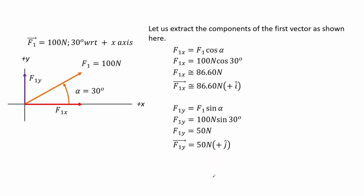Now let us extract each of the components of the three vectors. First for Force 1, the x component is the cosine function of the angle 30 degrees, which is about 86.6 newtons. In vector form, we add a positive i hat. Similarly, the y component is a sine function, which is 50 newtons, and in vector form we add a positive j hat.